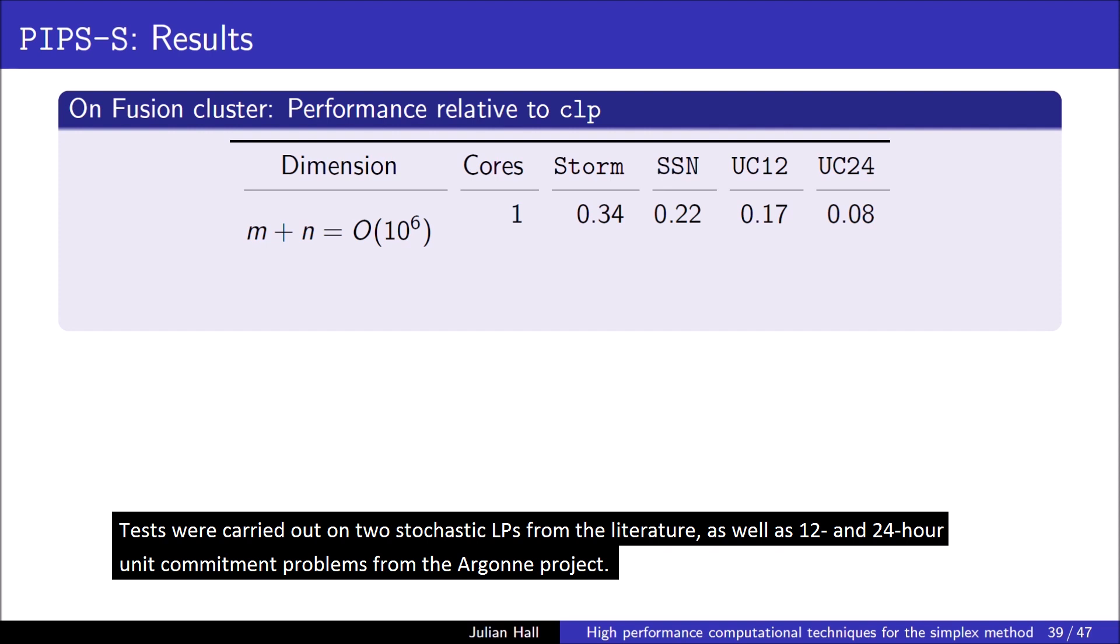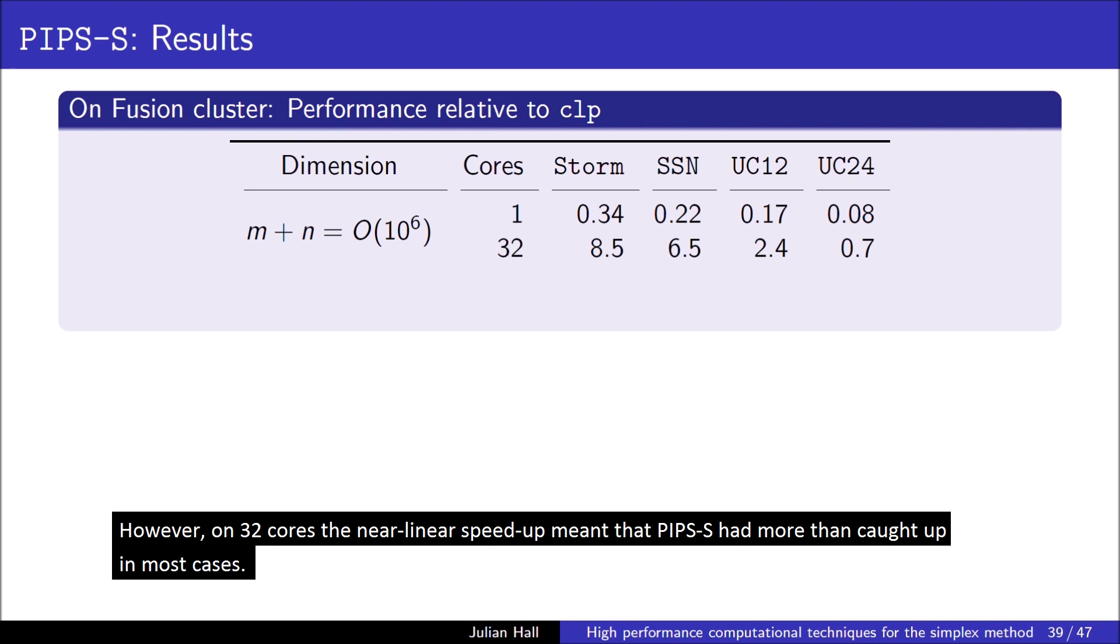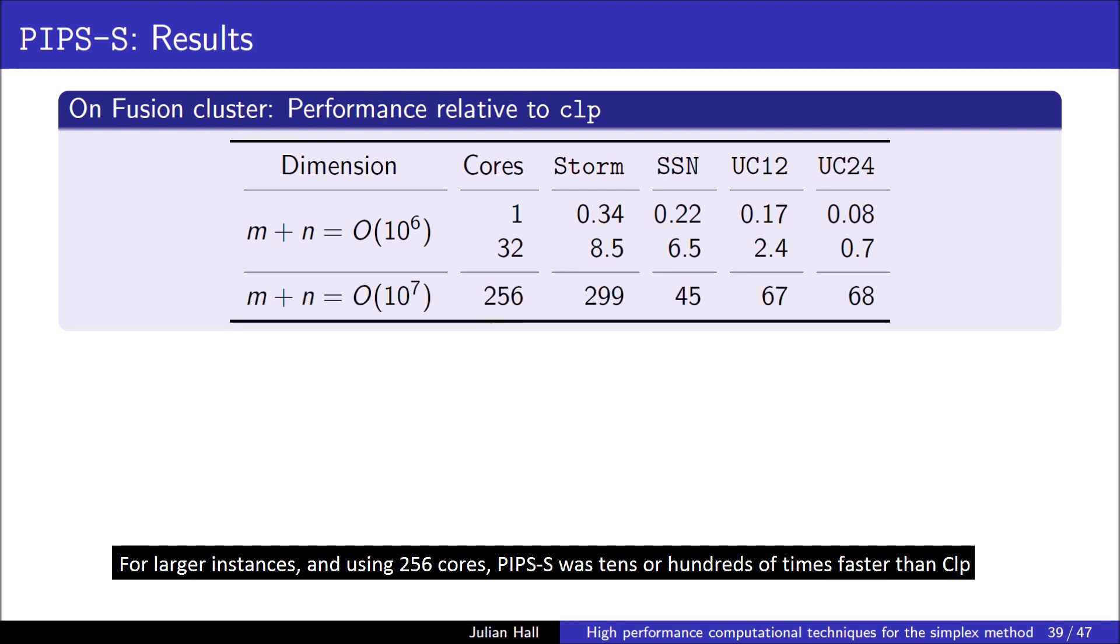Tests were carried out on two stochastic LPs from the literature, as well as 12 and 24-hour unit commitment problems from the Argonne project. Relative to CLP, there was a serial performance hit due to the lack of some algorithmic features, and the numerical linear algebra being less efficient with respect to sparsity. However, on 32 cores, the near-linear speed-up meant that PIPS-S had more than caught up in most cases. For larger instances, and using 256 cores, PIPS-S was tens or hundreds of times faster than CLP.